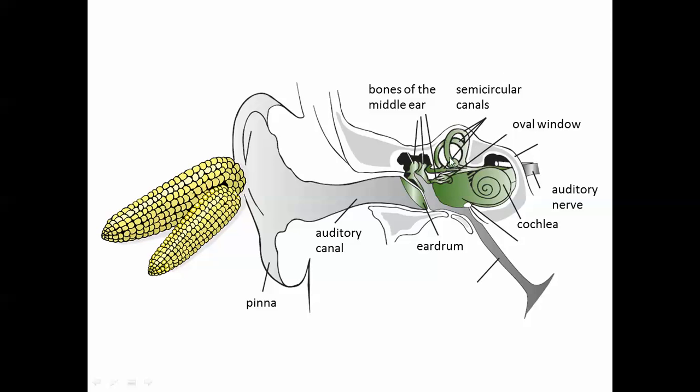Semicircular canals are important for balance, not so much for the perception of sound. These bones of the middle ear, we're going to name them in the next slide, will transfer the vibration.